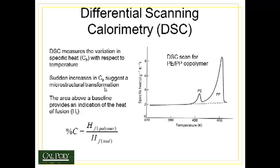The more common method is using differential scanning calorimetry (DSC), which tends to be more accurate. DSC measures the variation in specific heat with respect to temperature. Sudden increases in specific heat suggest a microstructural transformation — for example, a crystalline structure turning into a melt. The area above the baseline of the heat flow indicates the heat of fusion. So the area underneath this spike indicates the heat of fusion for turning crystalline polypropylene into a polypropylene melt. If you run a sample in DSC and see an endotherm peak, you take the area of that endotherm and divide it by the area of the endotherm for a perfectly crystalline sample of polypropylene to obtain percent crystallinity.